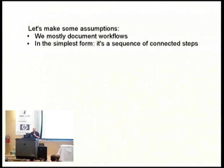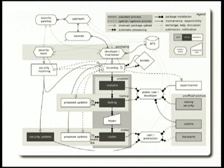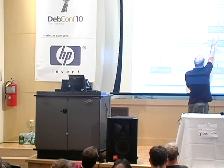We are really bad at documenting. Most of our intention is to document workflows — a workflow is a sequence of connected steps. In the Debian process, that can be quite hard because we have a lot of branches. I'd like a system to see the documentation as a big picture where I can see the complete process and zoom into any part. Something like this — I want to know more about this arrow that goes from the Debian maintainer to the incoming queue.